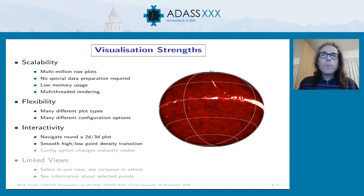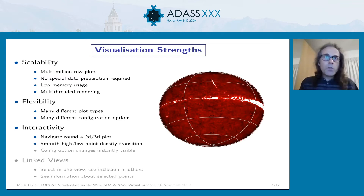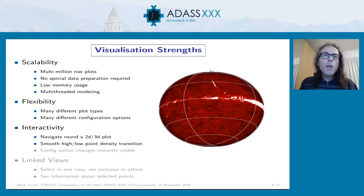One of the things TopCat does is visualization. There are a lot of different visualization packages out there — why would you want to use TopCat? It's quite scalable and works well with large numbers of points — certainly multi-million row tables — and you don't need to make any particular preparation of the data for it to do the visualizations. You don't need a high-specification machine; it will work on any old laptop or desktop, but if you feed it more memory and more cores it will run faster. It's quite flexible, with lots of different plot types and configuration options — marker sizes, color maps, line thicknesses, and so on. The plots are very interactive, supporting 2D and 3D navigation, and it tries hard to make sense whether you've got millions of points or just a few.